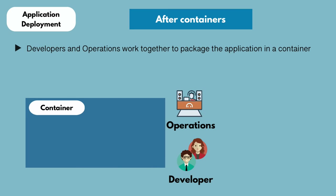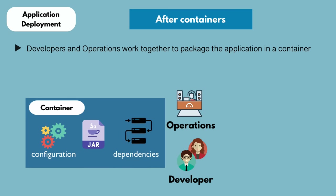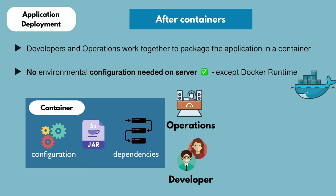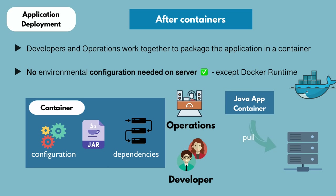With containers, this process is simplified. Developers and operations work together to package the whole configuration and dependencies inside the application. Since it's already encapsulated in one single environment, you don't have to configure anything directly on the server. The only thing you need to do is run a Docker command that pulls the container image from the repository and runs it. No environmental configuration is needed on the server — the only one-time effort is installing and setting up the Docker runtime on the server.